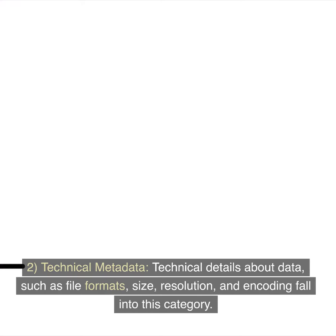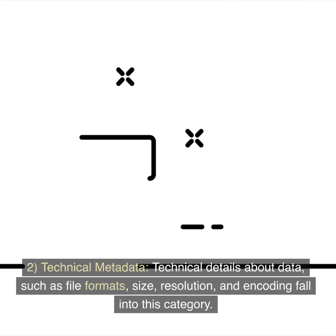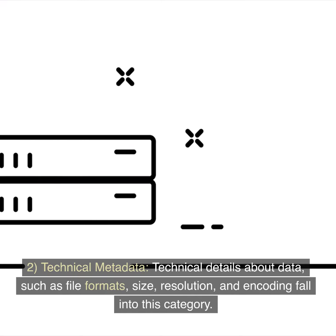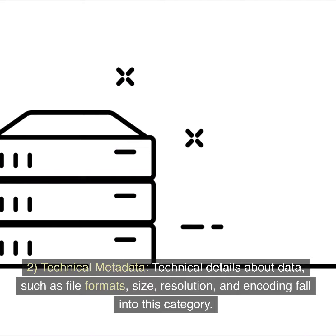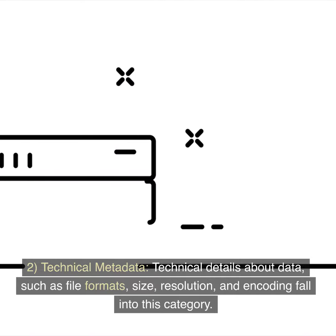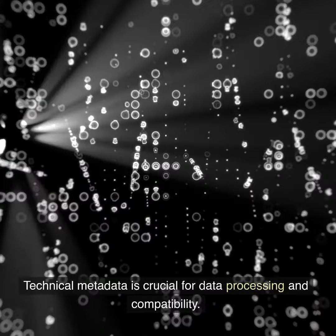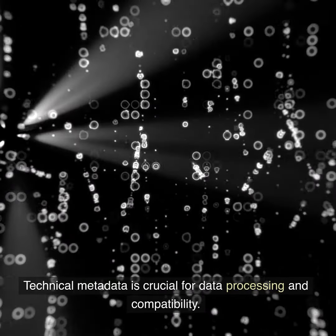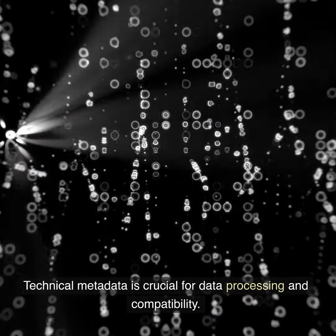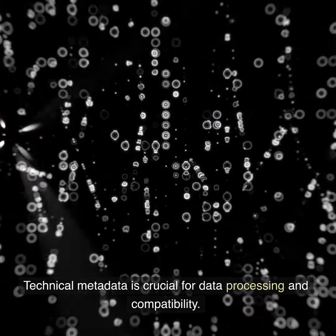2. Technical Metadata: Technical details about data, such as file formats, size, resolution, and encoding, fall into this category. Technical metadata is crucial for data processing and compatibility.